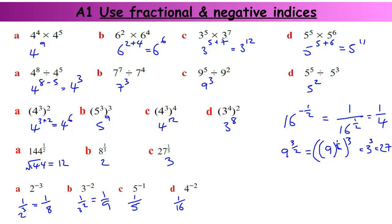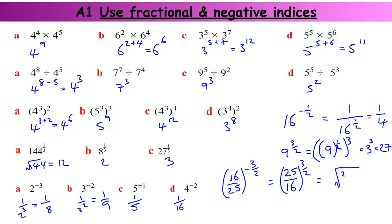A really tricky one to finish with: 16 over 25 to the power of minus 3 over 2. We've got a fraction base and a negative power. The negative power means we turn the fraction upside down — that gives us 25 over 16 — because that's the same as 1 divided by the fraction, the reciprocal. Now we need to deal with the 3 over 2, so I write it as the square root of 25 over 16, all to the power of 3. The square root of 25 is 5 and the square root of 16 is 4, and that's cubed. So we get 5 cubed over 4 cubed, which is 125 over 64.